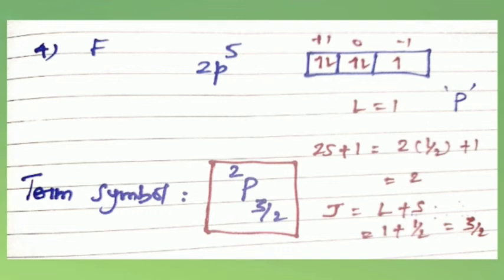For fluorine's 2p⁵ configuration, the px and py electrons cancel (paired), leaving an extra electron in pz. The ml values: −1+1+1 = 1, so L=1 and the term letter is P. The spin of the unpaired electron is 1/2, so 2S+1 = 2×(1/2)+1 = 2.